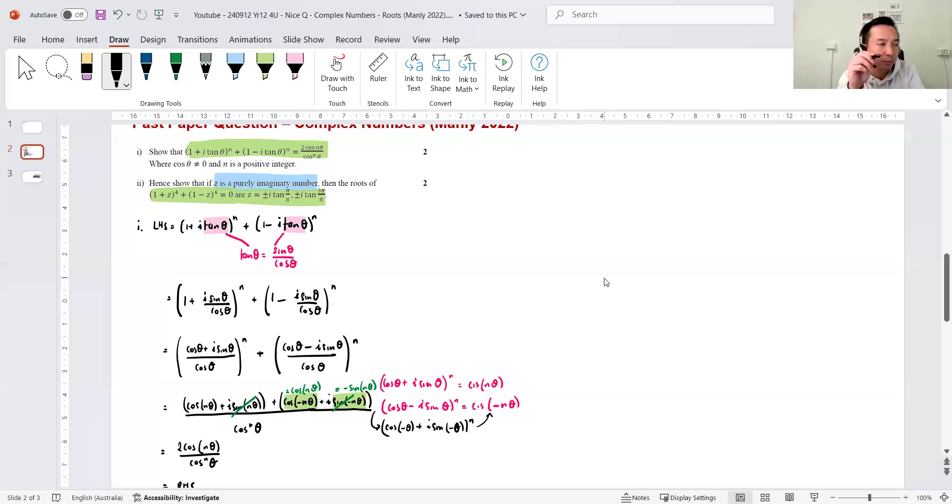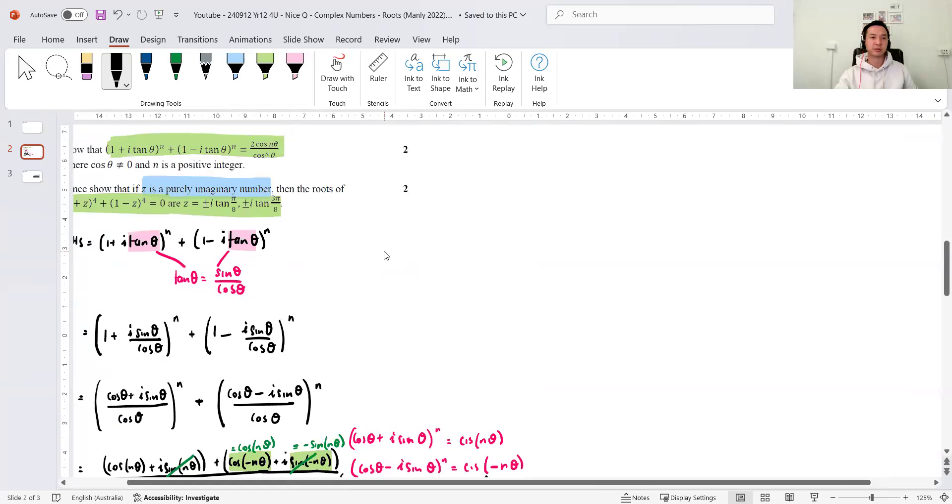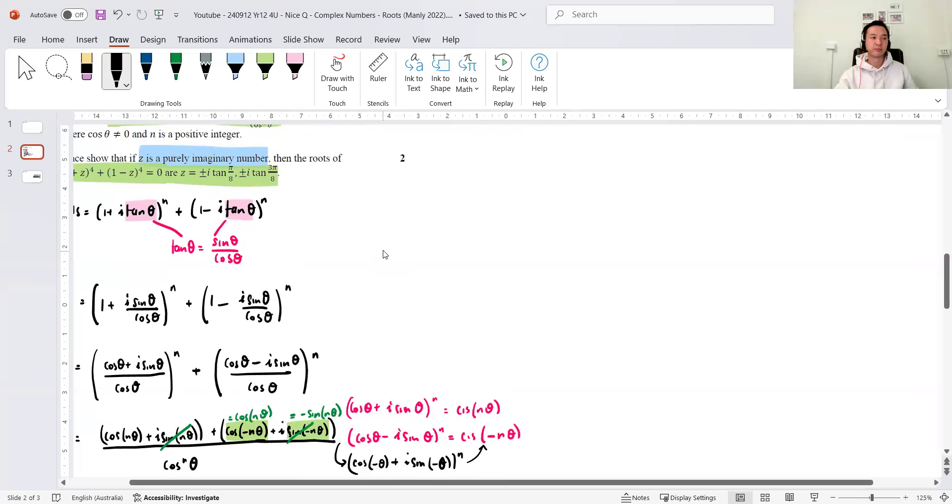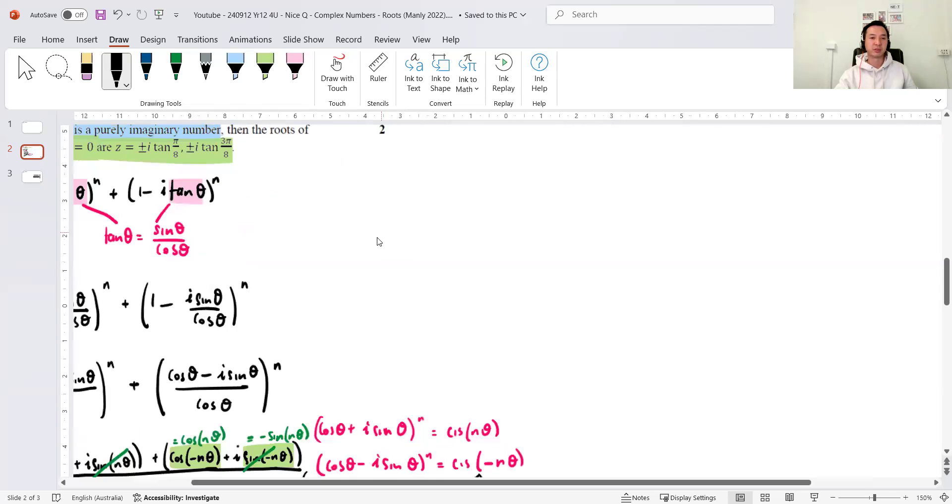Now, part 2. Let's have a quick look. If 1 plus z to the power 4, plus 1 minus z to the power 4. Now, where does z come from? It looks very similar to part 1, right? The only difference is i tan is replaced with z. So, maybe that's the substitution. I'll go, let z equal to i tan and see if I can go from there, right? So, z equals i tan. Now, let me think. How do I use the notion that it's purely imaginary of z equals i tan? Maybe I will. And then I use part 1. So, then that boils down to 2 over cos to the power n theta. I don't actually need that purely imaginary part. I think it's fine. Let's proceed.